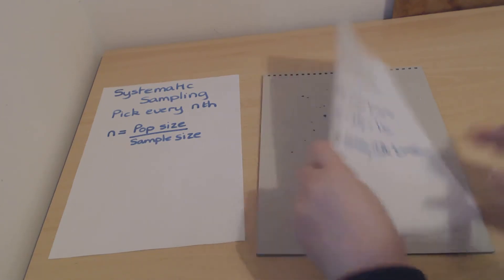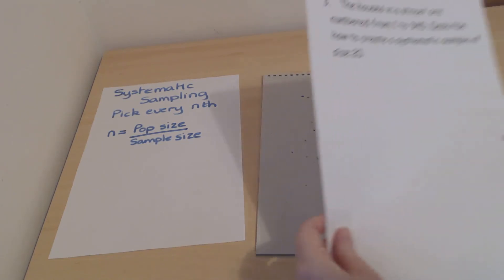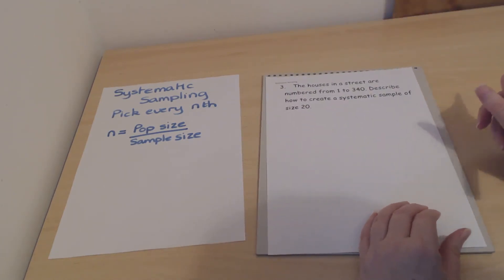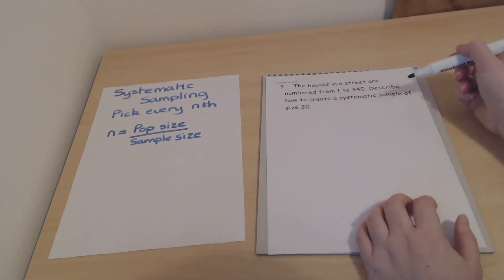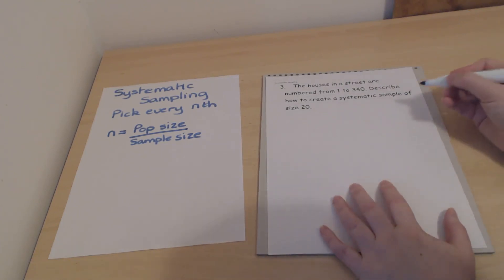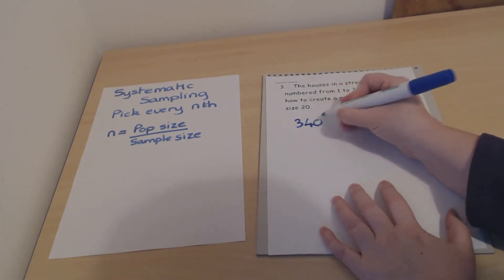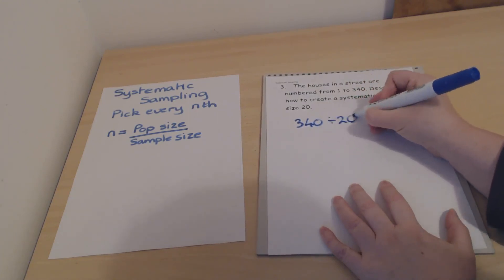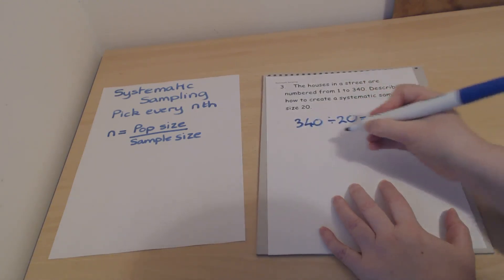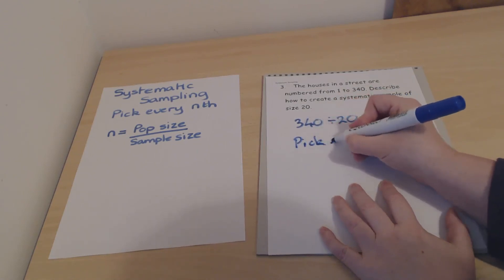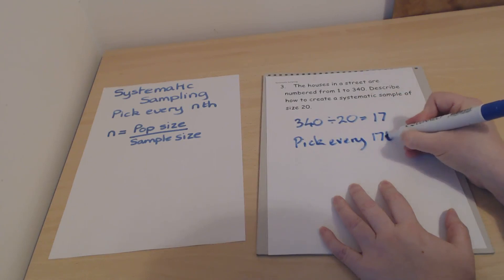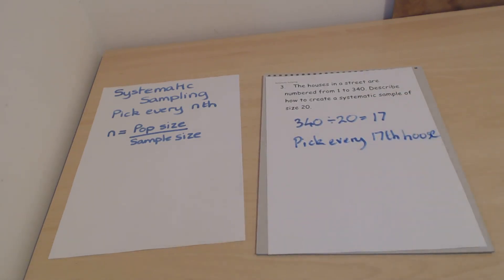Final one: Houses in a street are numbered from 1 to 340. Describe how to create a systematic sample of size 20. I'm not going to write that all out again, but the houses are already numbered so that's fine. We've got to work out 340 divided by 20, which is 17. So that means you would then pick every 17th house for your sample. That's systematic sampling.